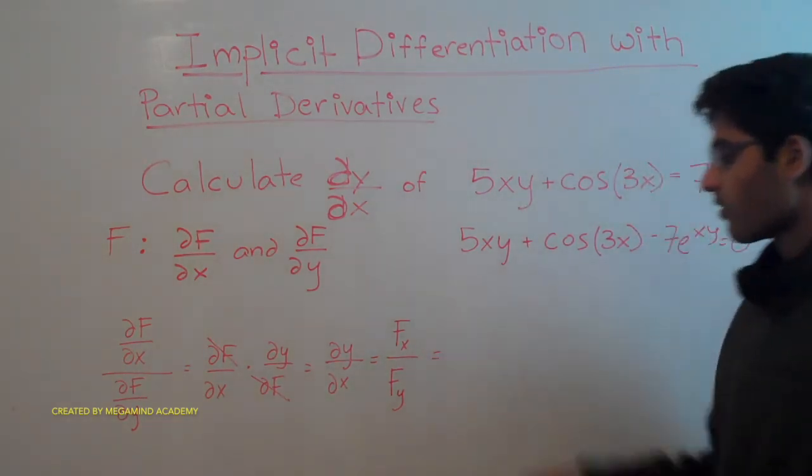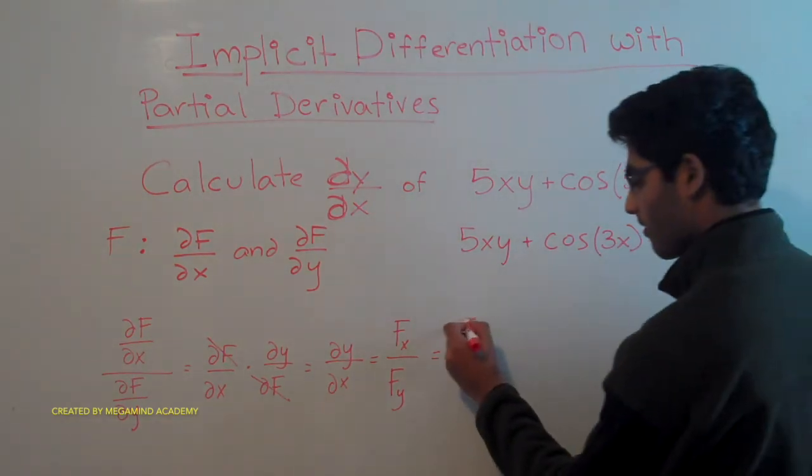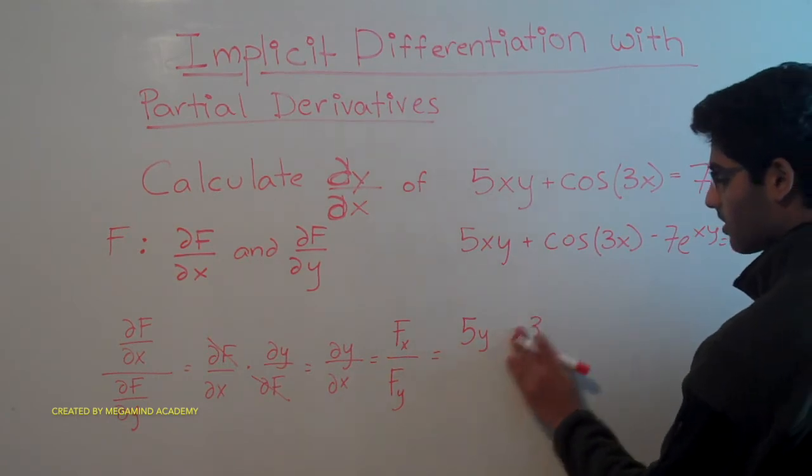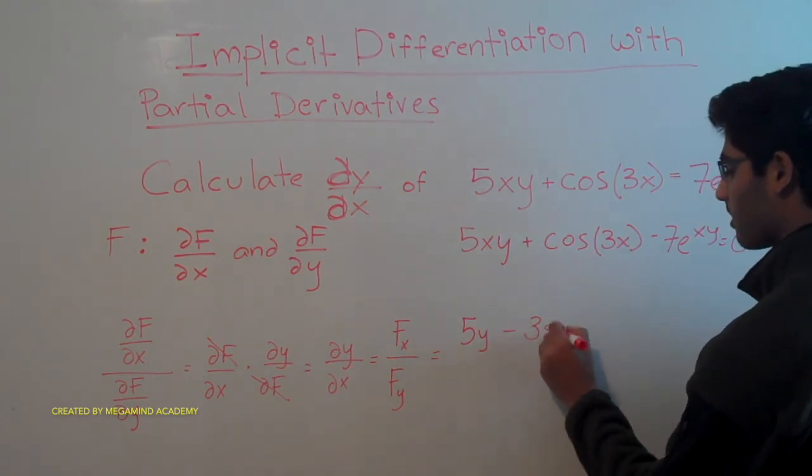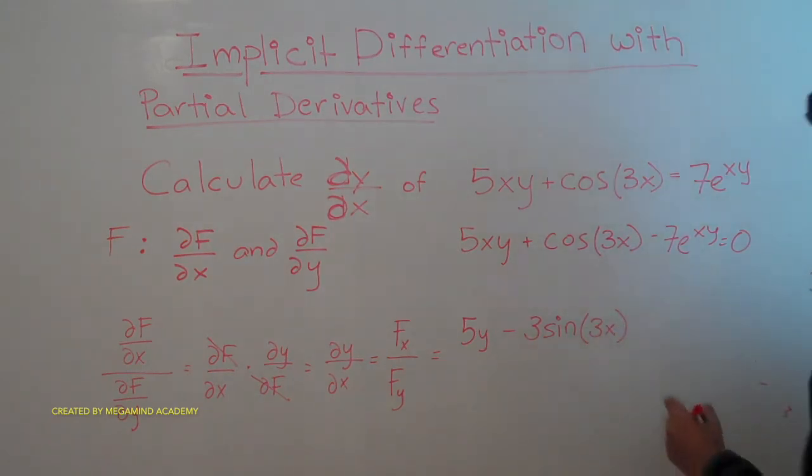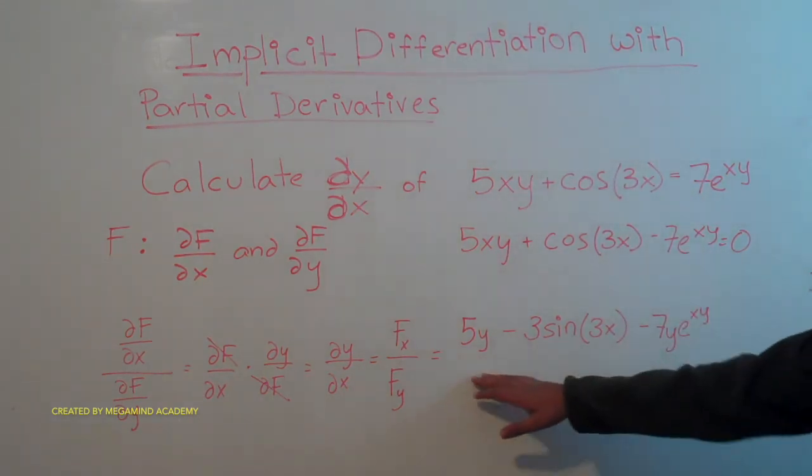If we look for fx, the partial of f with respect to x, we're going to get 5y minus 3 sine of 3x minus 7y times e to the xy power. So that's the derivative with respect to x.